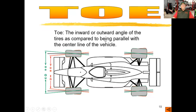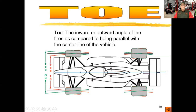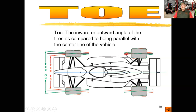Toe is the inward-outward angle of the tire as compared to being parallel with the center line of the vehicle. We would be comparing the front of the tire and the rear of the tire distance to the center line of the vehicle. If the front of the tires are pointing in, that's going to be toe in or positive toe. If the front of the tires are pointing out, that's going to be toe out or negative toe. The same thing can happen to the rear wheels — if the tires are pointed in, it would be positive toe; if the tires are pointed out, it will be negative toe. And we'll reference rear toe as we talk about thrust angle in a couple of slides.